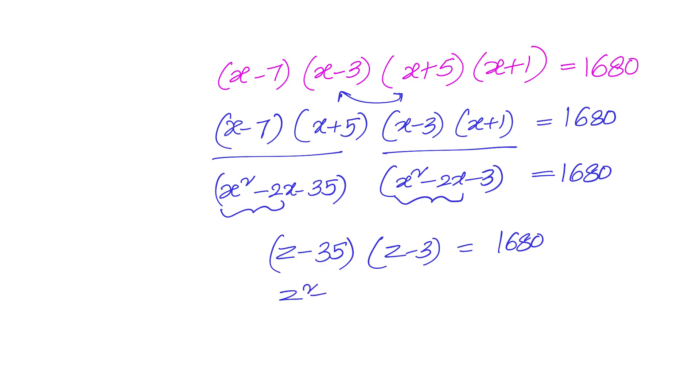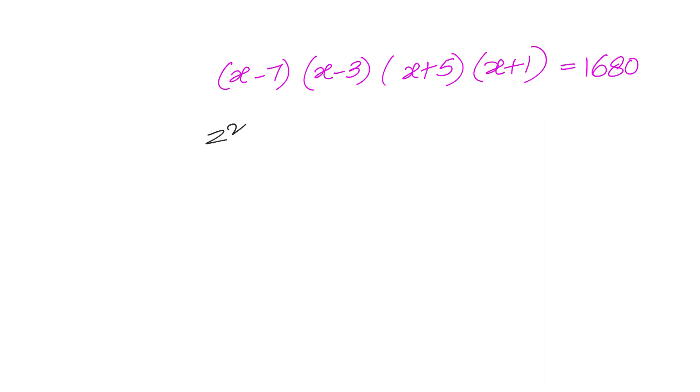We can write it as z square minus 38z plus 105 equals to 1680, or we can say that z square minus 38z minus 1575 equals to 0. Now, we have to factorize this and substitute back again z as x square minus 2x.